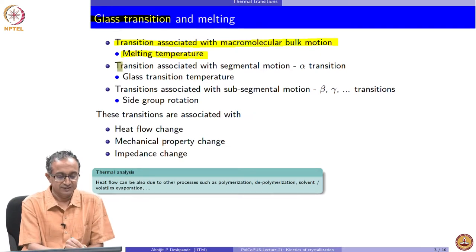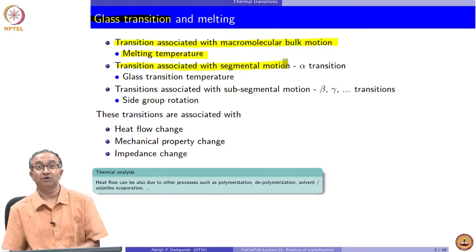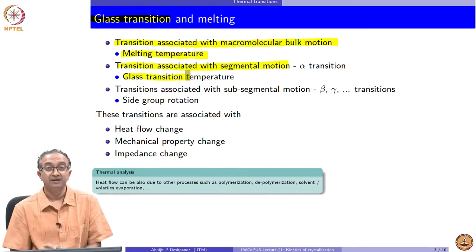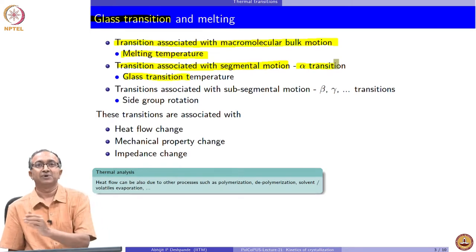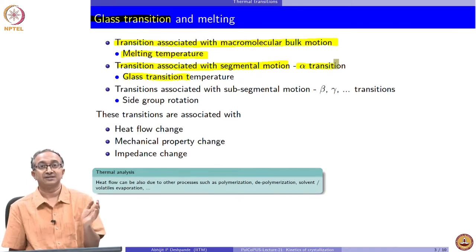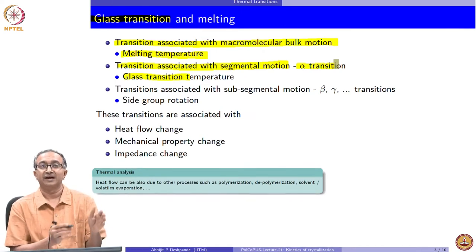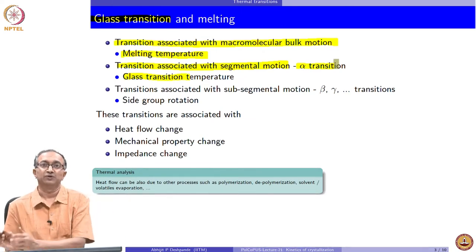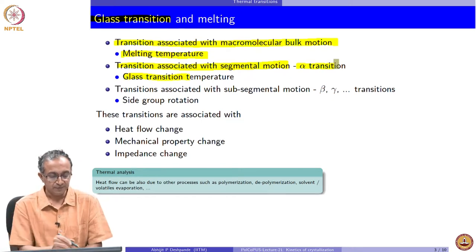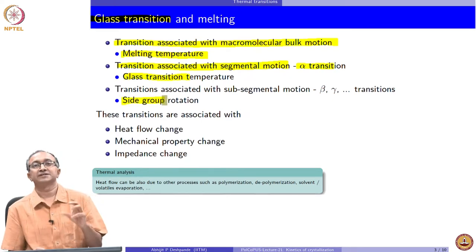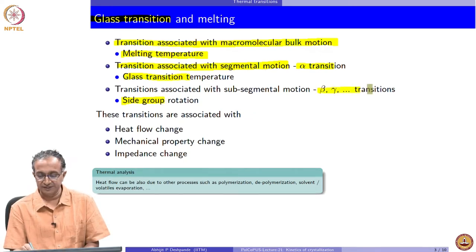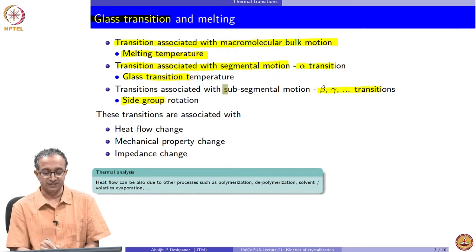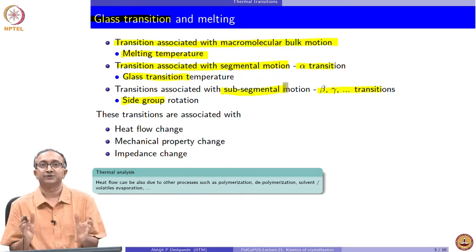At room temperature polyethylene is still flexible, meaning we are above a transition called the glass transition temperature, where macromolecular flexibility is present. This is also sometimes called the alpha transition. Alpha, beta, gamma are used to indicate that there are several mechanisms at the molecular scale, each responsible for one transition. If there are side groups or other conformational changes possible, they are associated with beta and gamma transitions, which are necessarily smaller scale compared to segments.